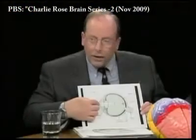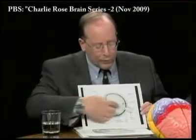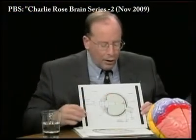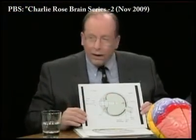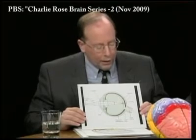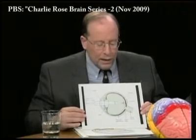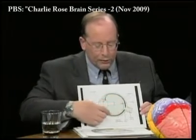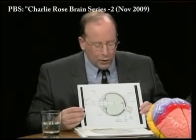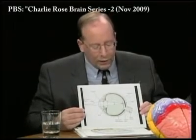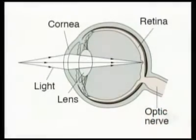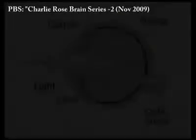What we're mostly concerned about here is what happens once the information reaches the retina and forms an image on the retina. At that point, the photoreceptive cells that line the back of the eye collect the information from the image and funnel it through this single, rather narrow channel — the optic nerve.